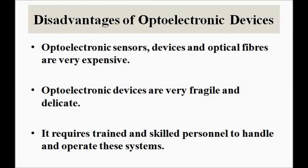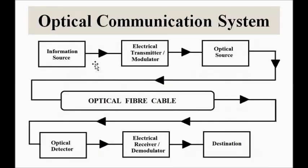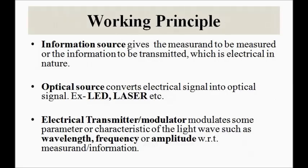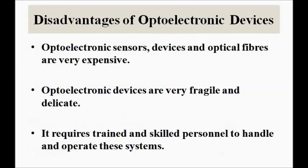Here we have discussed the basic things related to optoelectronics, starting from the basic definition, the scope and applications, a basic overview of the optical communication system, its working principle, and the advantages and disadvantages. I hope you liked this video. Please subscribe to my channel Engineering Tutorial for more videos related to engineering, science, and technology.